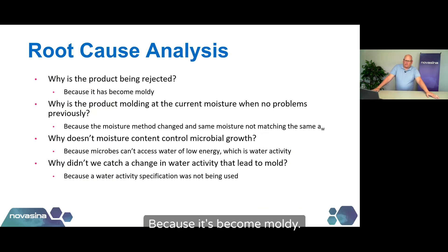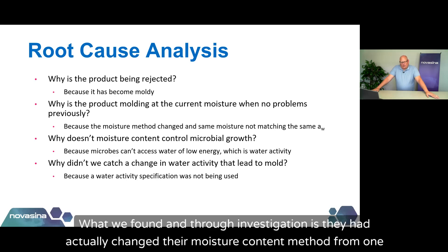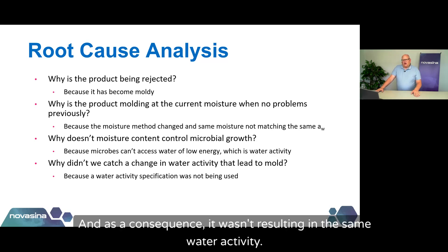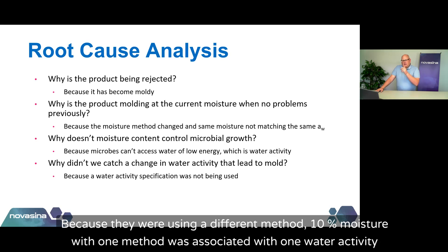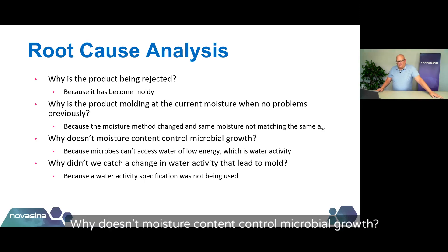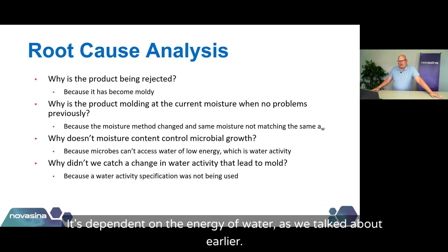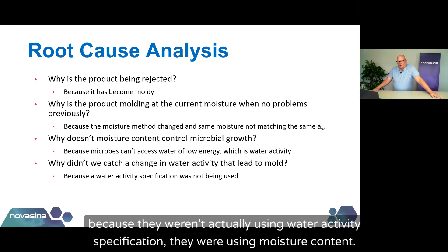As a consequence, it wasn't resulting in the same water activity. Even though they were showing it as still 10% moisture, 10% moisture with one method was associated with a water activity below 0.7, while with the other method it was above 0.7. Why doesn't moisture content control microbial growth? Because microorganisms' ability to access water isn't dependent on the amount of water — it's dependent on the energy of water. Why didn't they catch a change in water activity? Because they weren't using a water activity specification — they were using moisture content. Water activity is directly related to microbial growth based upon energy. Microorganisms have an internal water activity and an ideal water activity where their turgor pressure is optimal and their metabolism is optimized — under those conditions, they will grow and replicate.